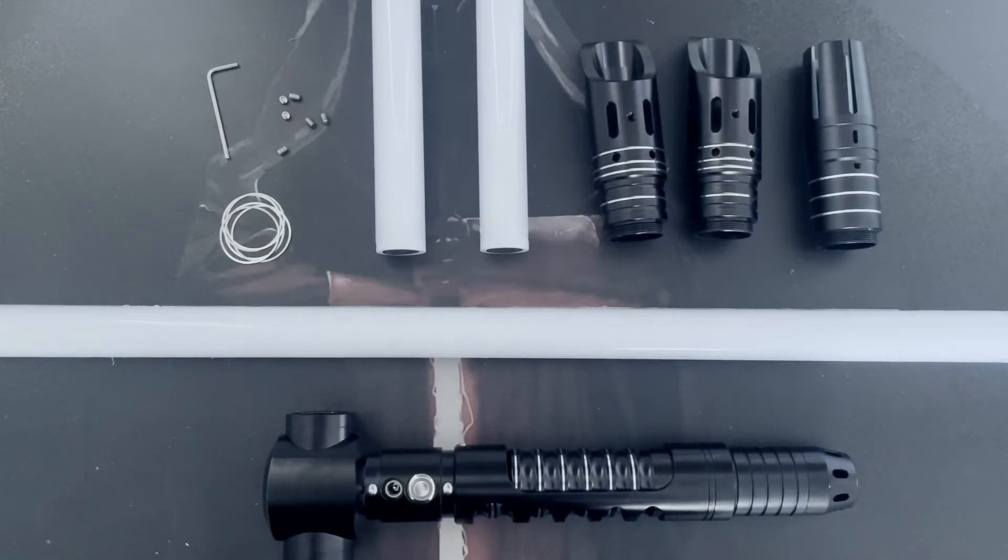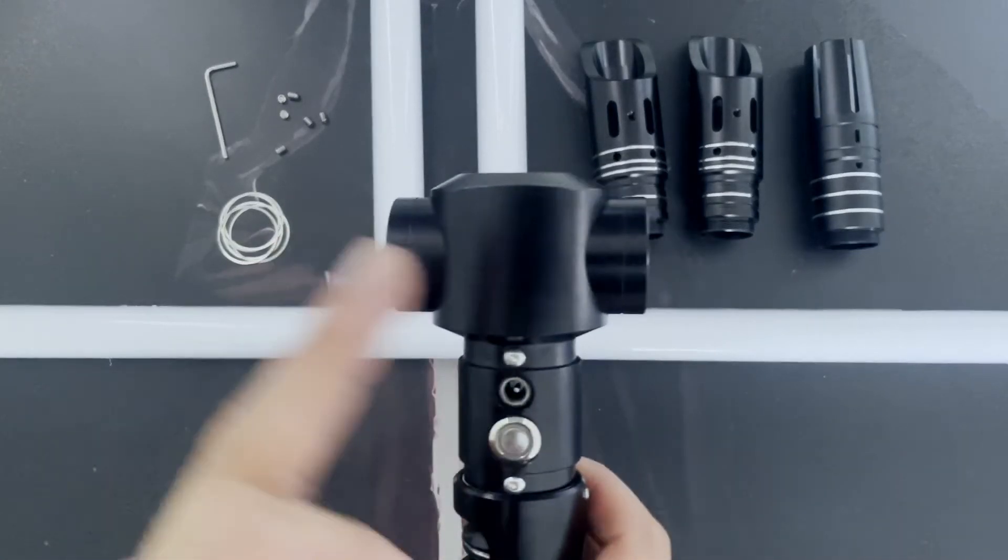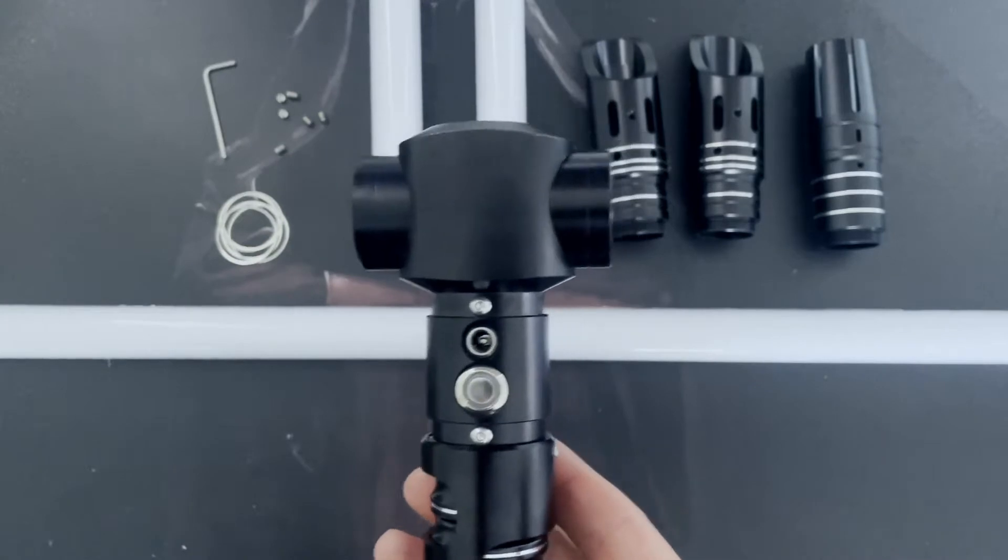Hi everyone, this is James from ES Sabers. Today I'm going to go through how to assemble your cross guard saber, which is slightly different to our standard straight sabers because you'll have to put the side emitters on and the top emitter on your cross guard.